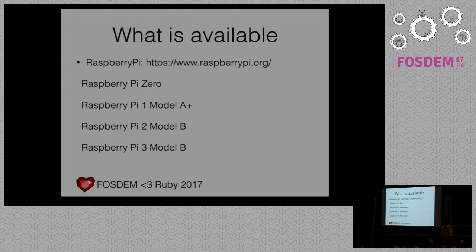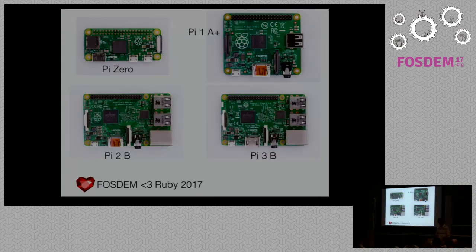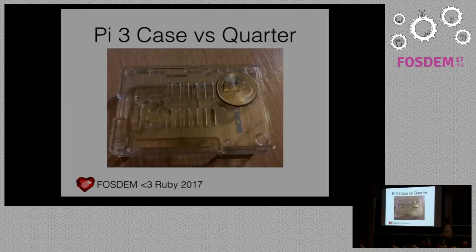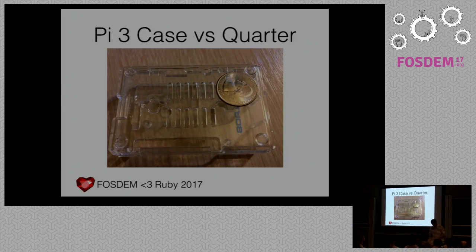Let's talk Raspberry Pi. You have Pi Zero, Pi One Model A, Pi Two Model B, and Pi Three Model B — these are the ones available now. To get a little perspective, a Pi Zero is probably the size of your thumb, and a Pi Three is the size of a credit card. This is the plastic case for Raspberry Pi Three.